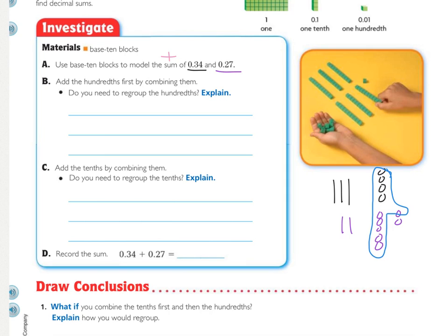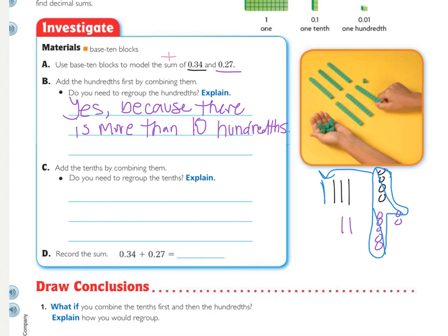And I have a group of 10. With that group of 10, I'm going to actually cross them out as hundreds, and I'm going to draw an arrow and add one to my tenths because it takes 10 hundredths to become a tenth. So just to fill in this part, did we need to regroup the hundredths? The answer was yes, and why? See if you can answer that.